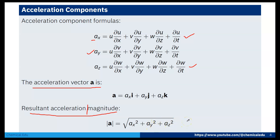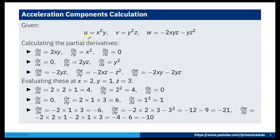We calculate the required partial derivatives one by one. Given u = x²y, v = y²z, w = −2xyz − yz²: ∂u/∂x = 2xy, ∂u/∂y = x², ∂u/∂z = 0; ∂v/∂x = 0, ∂v/∂y = 2yz, ∂v/∂z = y²; ∂w/∂x = −2yz, ∂w/∂y = −2xz − z², ∂w/∂z = −2xy − 2yz.